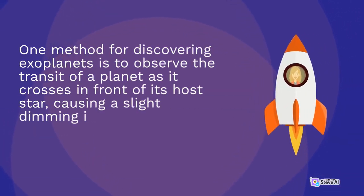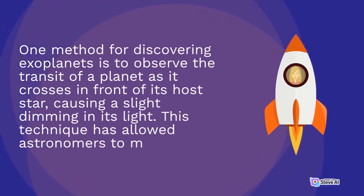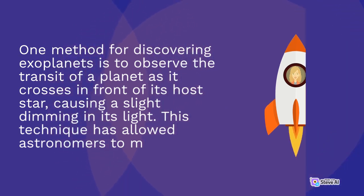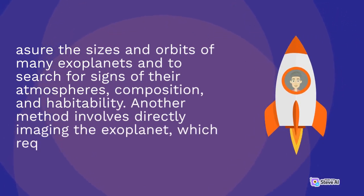One method for discovering exoplanets is to observe the transit of a planet as it crosses in front of its host star, causing a slight dimming in its light. This technique has allowed astronomers to measure the sizes and orbits of many exoplanets and to search for signs of their atmospheres, composition, and habitability.